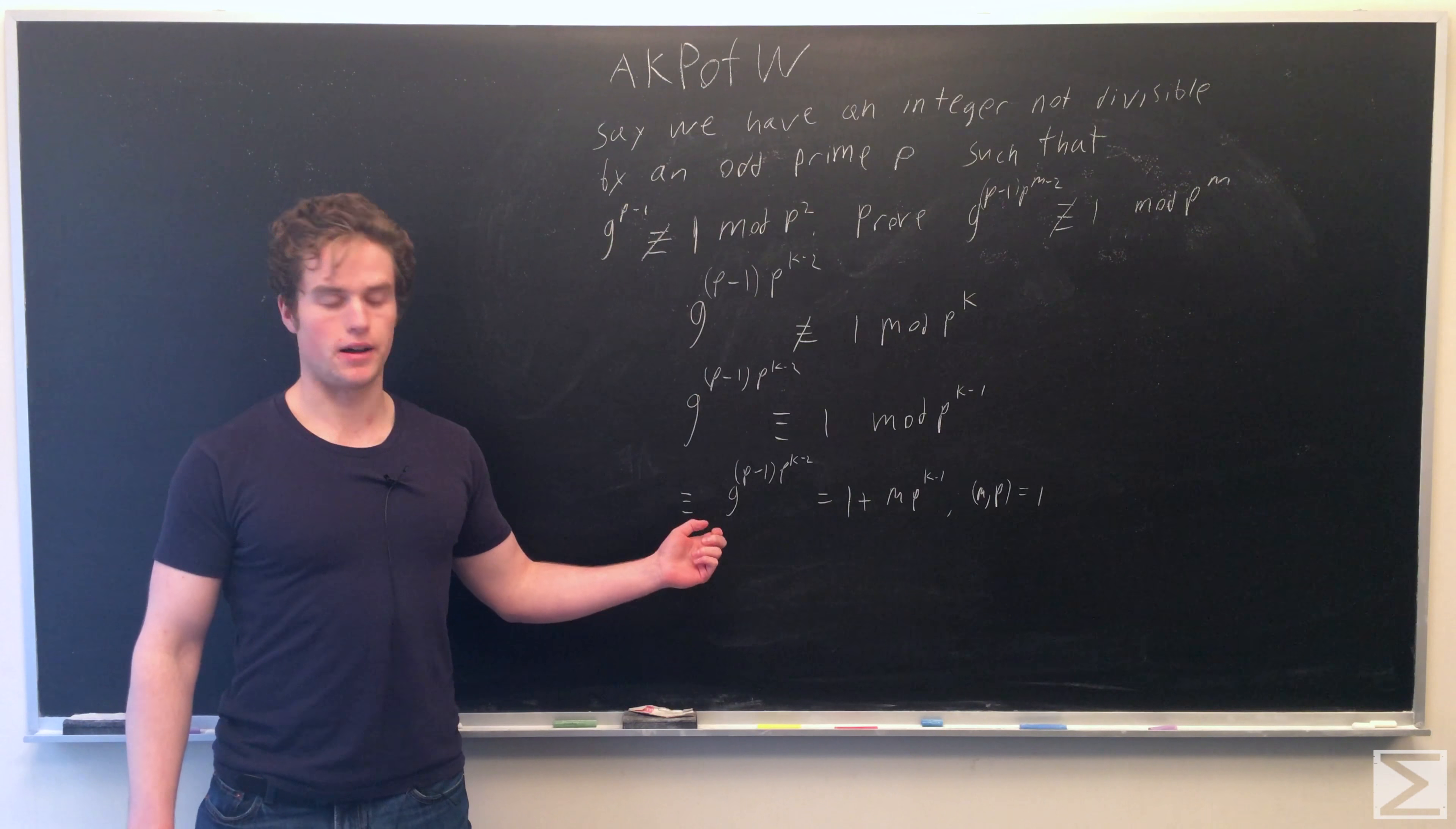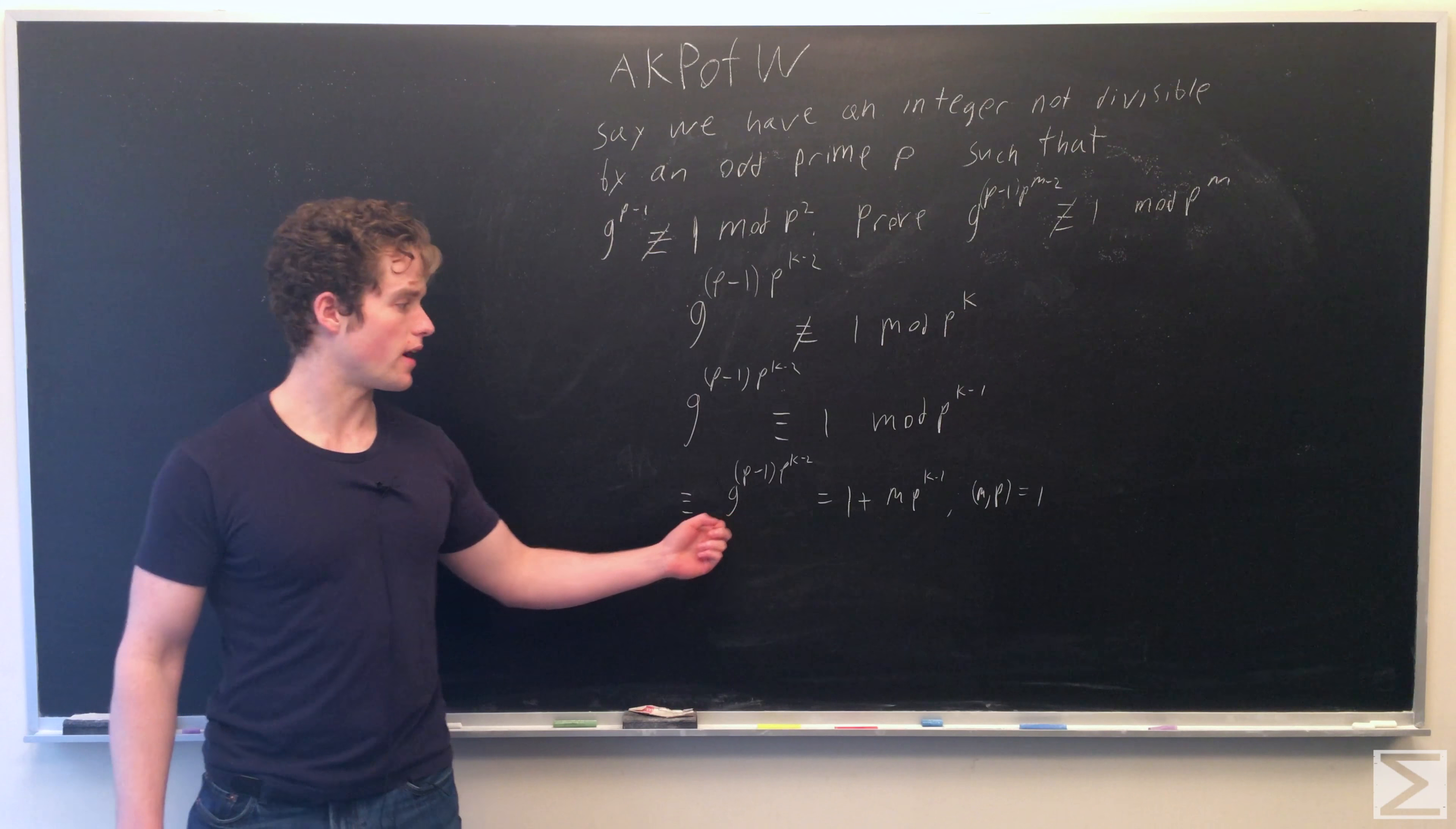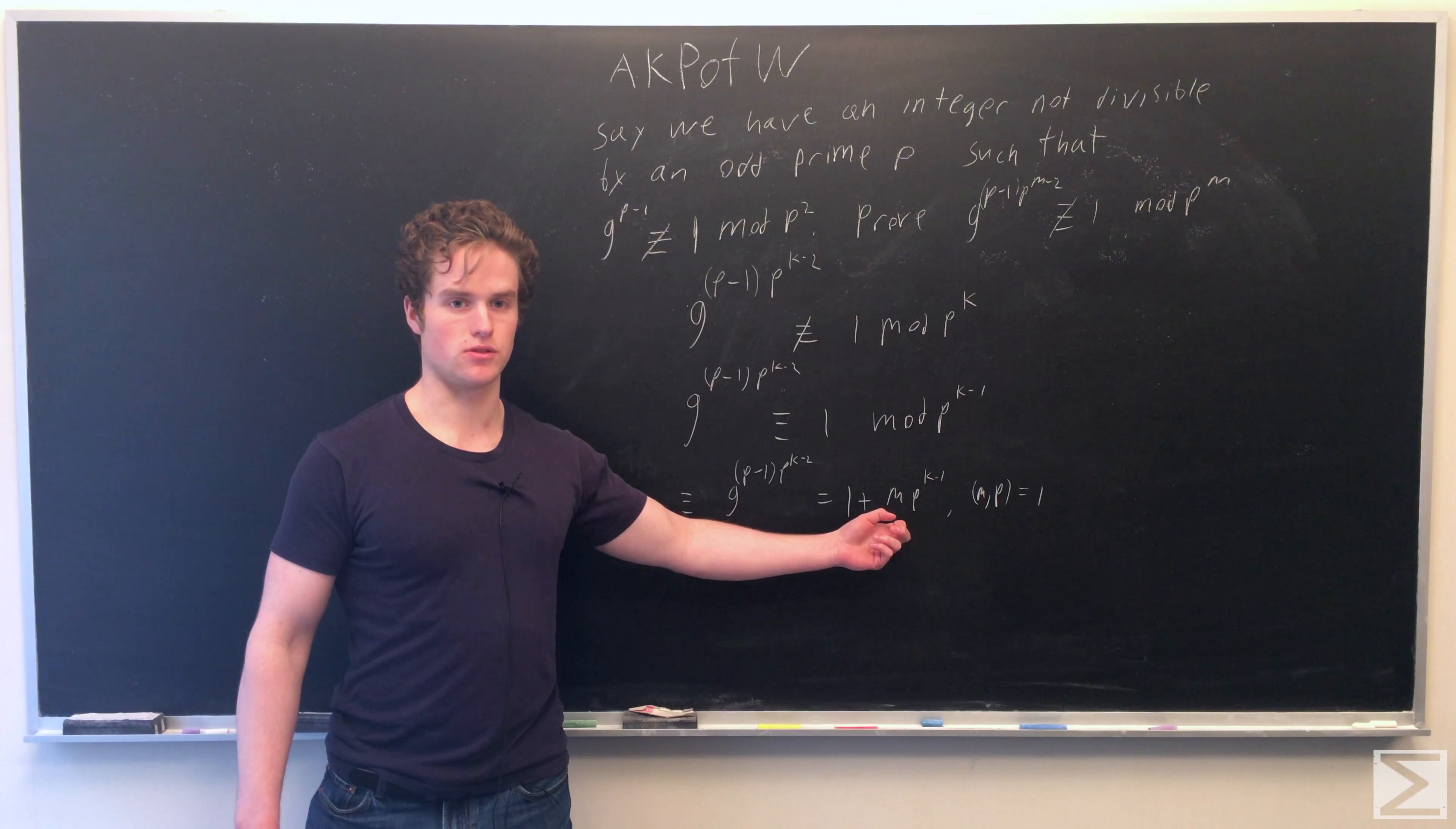This means we can represent g^(p-1)·p^(k-2) as 1 + m·p^(k-1), where m has no factors of p. So gcd(m, p^(k-1)) = 1.